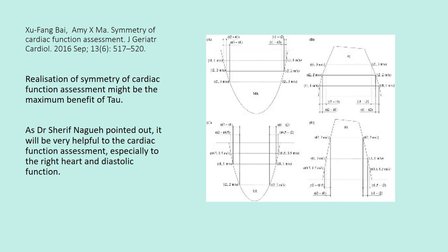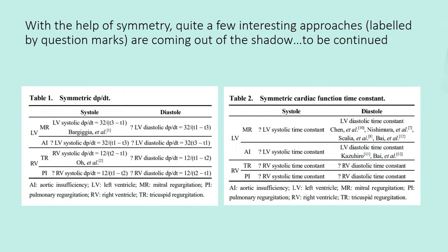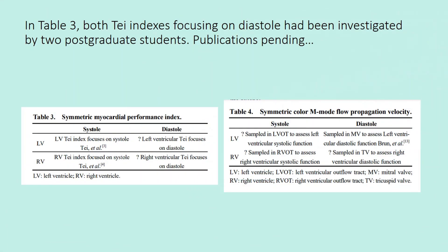Realization of the symmetry of cardiac function assessment might be the maximum benefit of tau. As Dr. Sharif Nagwe pointed out, it will be very helpful to cardiac function assessment, especially for the right heart and diastolic function. With the help of symmetry, quite a few interesting approaches are coming out of the shadow. In Table 3, both TAU indexes focusing on diastole have been investigated by two postgraduate students, with publications pending.